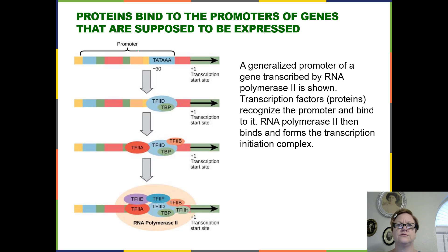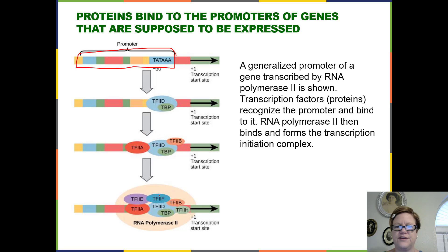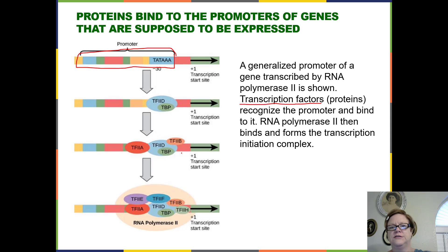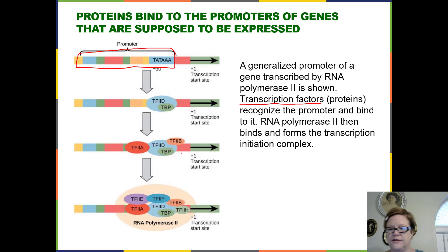The promoter is where the different proteins are laid down. Here's the promoter on the DNA, with the T-A-T-A-A sequence. You have these different proteins shown as little ovals — they're called transcription factors. Transcription factors lay down on the promoter, telling the RNA polymerase where it needs to go. Once all the transcription factors are laid down on the promoter, the RNA polymerase comes — but we still haven't copied anything yet. We've just attracted the RNA polymerase to the right spot for a gene that needs to be expressed.